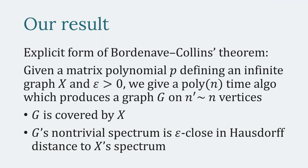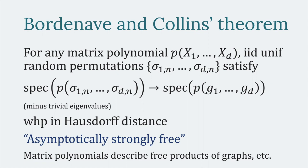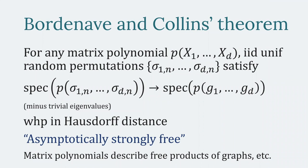What we do in our paper is make this theorem algorithmic: given a matrix polynomial defining an infinite graph and some ε > 0, there is a polynomial-time algorithm that produces a graph on O(N) vertices such that the finite graph is covered by the infinite graph and the finite graph's spectrum is ε-close in Hausdorff distance to the infinite graph's spectrum. Question about the random statement: does the probability of error sum to a finite value in the infinite sequence? It converges in probability — the probability goes to one as N goes to infinity.